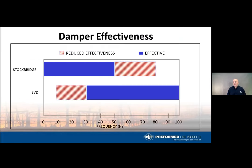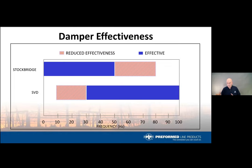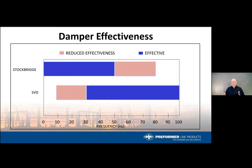SVDs are only good for conductors three-quarters of an inch and smaller; their frequency ranges will be around 30 Hz and up. Stockbridge dampers are very good on large conductors at low frequencies — say 50 Hz and down. There is some overlap, but in distribution applications, SVDs are typically what's recommended when damper analysis is performed.